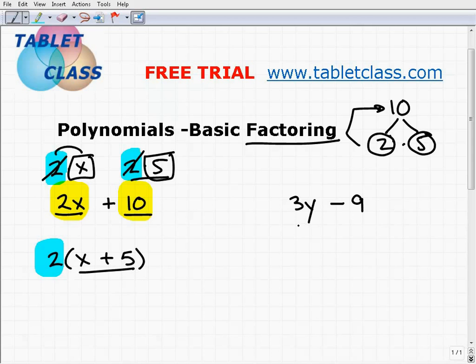Alright, so let's take a look at this problem now, giving you an opportunity to apply what you learned. So we have 3y minus 9. My first question to you: are there any common factors amongst 3y and 9? This problem is very similar to the first one I just showed you, and of course there is. When I look at the factors of 3 and y, that's 3 times y, and the factors of 9 are 3 times 3. So I can factor out a 3.